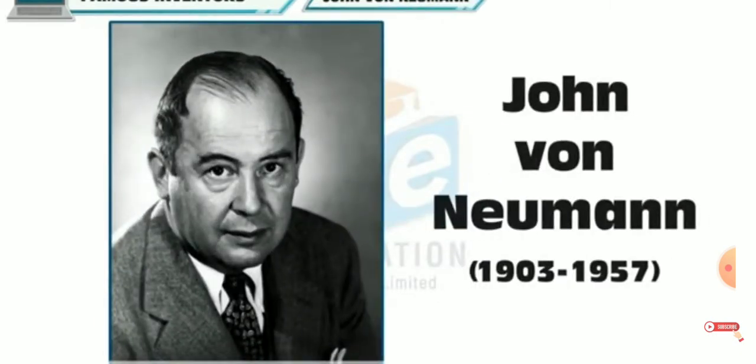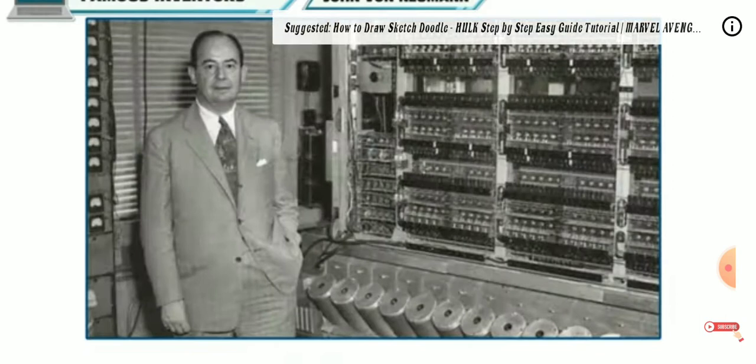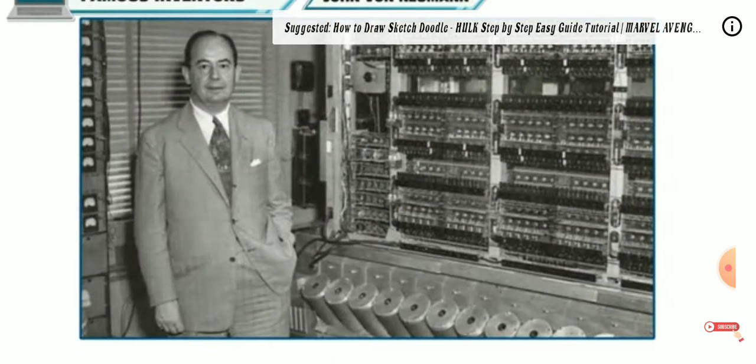John von Neumann was a Hungarian-American mathematician. He was born on December 28, 1903 in Budapest. He made major contributions to a number of fields including mathematics, physics, statistics, and computing. He is famous for the von Neumann architecture and linear programming.